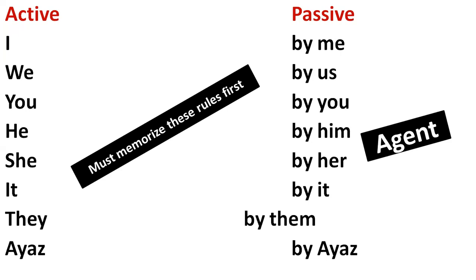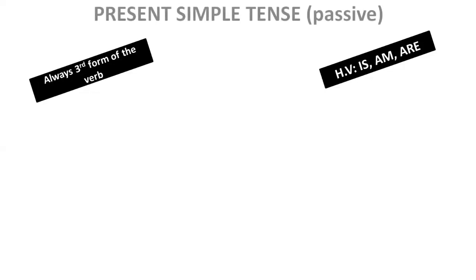Alright guys, now our first tense — present simple — we start it. First, present simple tense passive. As I have said, if we talk about present simple tense active, in active we use 'do' and 'does', and the first form of the verb. Now since we are learning passive, the helping verbs in passive are different. In present simple passive, the helping verbs are 'is', 'am', 'are'.